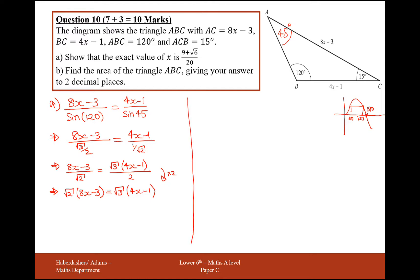Looks like we've got a lot more work to do on this, so we're trying to isolate x on its own. So expand the brackets, so it's going to be 8 root 2, lots of x, minus 3 root 2 equals 4 root 3x minus root 3. So taking the x on to the left and any other numbers on to the right, this is going to be 8 root 2x minus 4 root 3x equals 3 root 2 minus root 3.